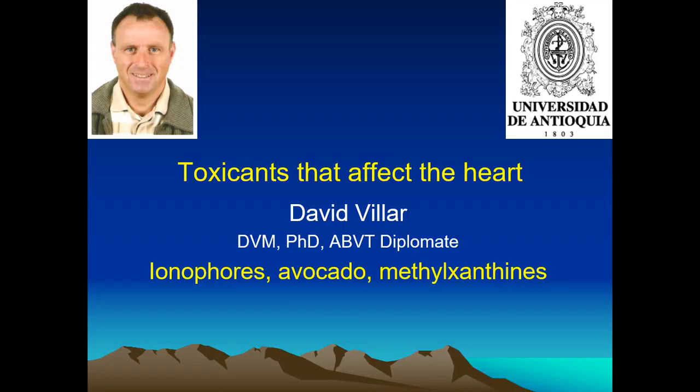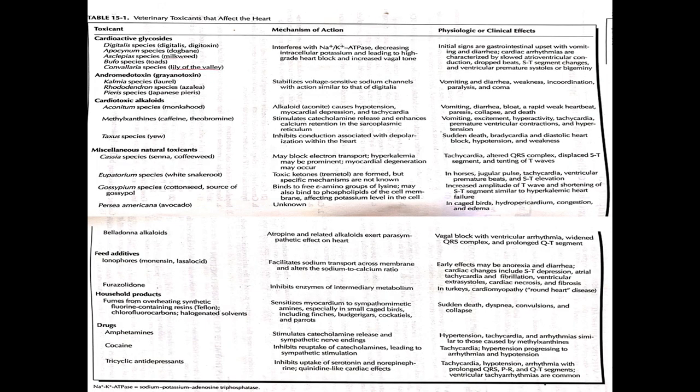Hello, this is David Villar, and welcome to this first presentation on toxicants that affect the heart. On this one we discuss ionophores, avocado, and methylxanthines. On this table of toxicants that affect the heart, ionophores fit within the feed additives, the methylxanthines are like caffeine and theobromine or cardiotoxic alkaloids, and avocados fall within the miscellaneous natural toxicants.